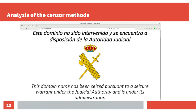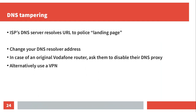This is the police landing page I mentioned. When you enter a URL of a censored website, it shows a symbol of the civil guard and some information. In the case of DNS tampering, what the ISPs did was resolve the hostname in their DNS servers to the police landing page. This was quite easy to circumvent — you just change the DNS resolver address on your local machine.